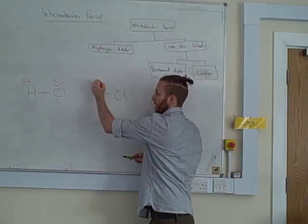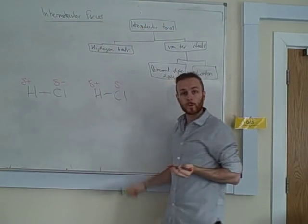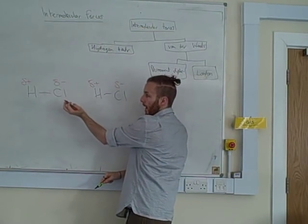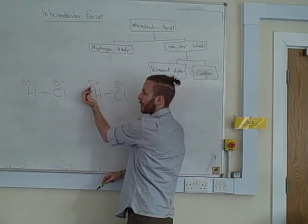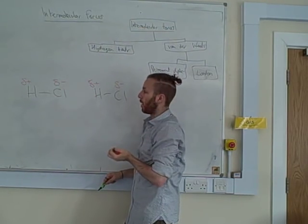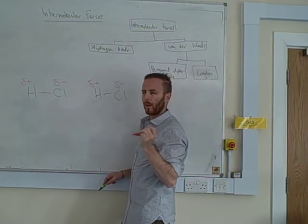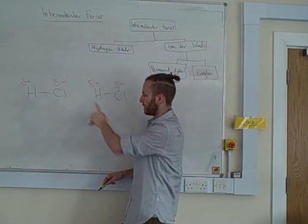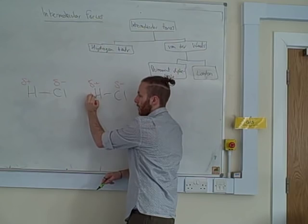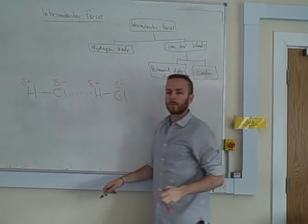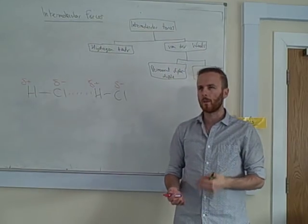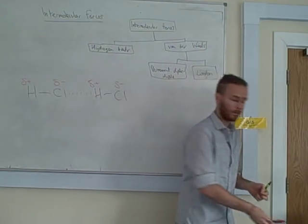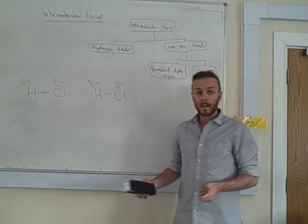This is called a permanent dipole, because it always exists. This chlorine will always be more electronegative than that hydrogen, therefore you always have it. And then on the next molecule, we're going to have exactly the same, for exactly the same reason. Now, what can now happen is the negative dipole from one molecule can attract the positive dipole from the neighbouring molecule. That word neighbouring is quite a good one to use. And we'll just show a little dashed line to show that there. So, that's how you get a permanent dipole-dipole force. They're the middle strength for an intermolecular force.